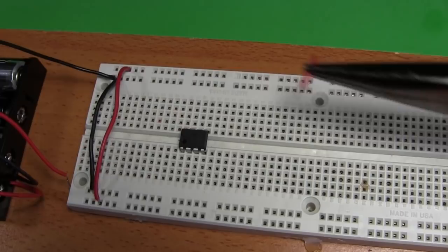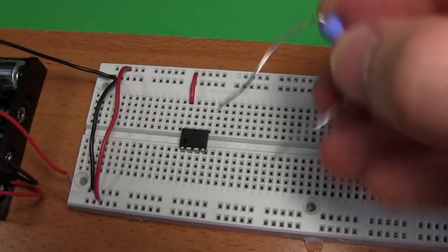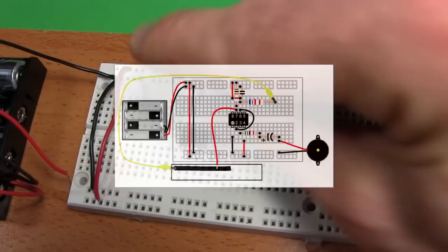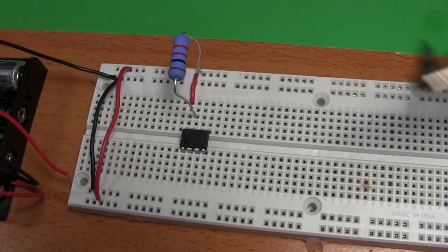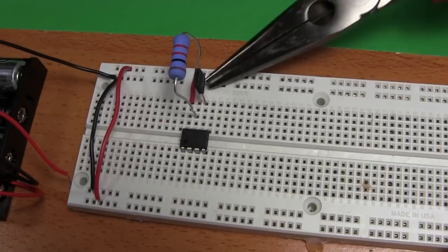Next connect a red wire between these holes. That connects pin eight to battery positive. Taking the one kilo ohm resistor, plug either leg in this hole and the other leg in this hole. That connects it between battery positive and pin seven. Plug the 0.1 microfarad capacitor in these holes, oriented either way. That connects it between battery negative and pin six.